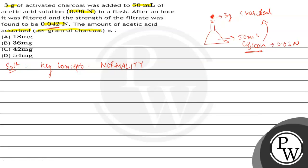Now, let's solve this question. Initial millimoles of acetic acid solution is given 0.06 normal times 50 mL equals 3 millimoles. Afterwards, new normality of solution is given 0.042 normal.